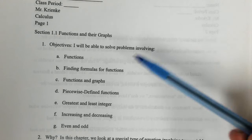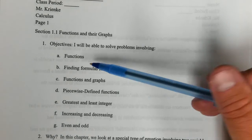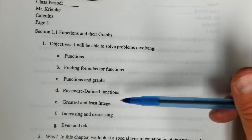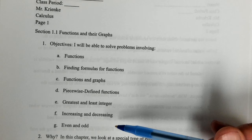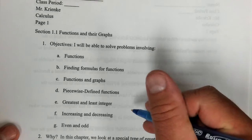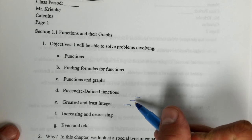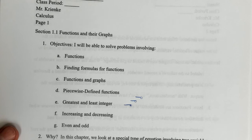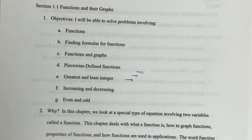Alright, so there's many objectives in this. It is just about functions, but there's a lot. There's functions, finding formulas for functions, functions and graphs, piecewise defined which has several parts, greatest and least integer which is kind of like a step function, like going up like that, but not overlapping, where one side or the other has to have a hole like that.